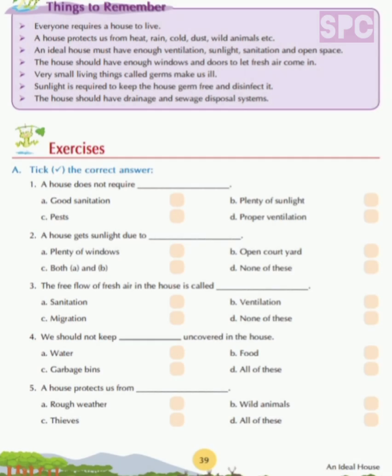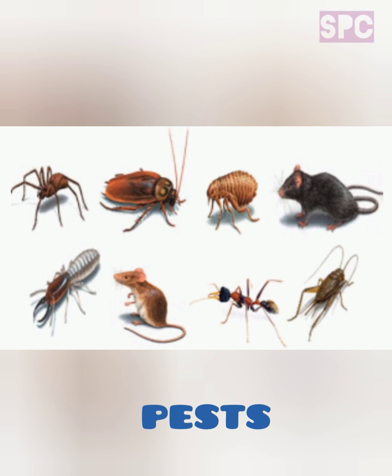Let's move on to the book exercises. Question A: Tick the correct answer. For each question, there are four options and we have to tick the correct answer. Question 1: A house does not require — good sanitation, plenty of sunlight, pests, or proper ventilation. A house does not require pests. Pests are unwanted animals and insects that come inside our homes, for example rats, cockroaches, lizards, etc. These pests carry harmful disease-causing germs, so we must keep them away from our houses.